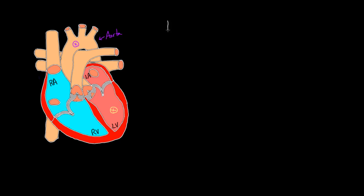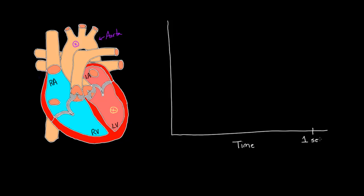What happens if I follow the pressure at those two spots over time? We're just following the pressure at those locations, not tracking a red blood cell since those move around. So this will be time on the x-axis. What does the pressure look like at that location? Let's say we're following for one second. If my heart rate is 60 beats a minute, that means one second equals one beat. 60 beats a minute is actually pretty low — like if I'm reading a book or relaxing. On this side, let's do pressure.